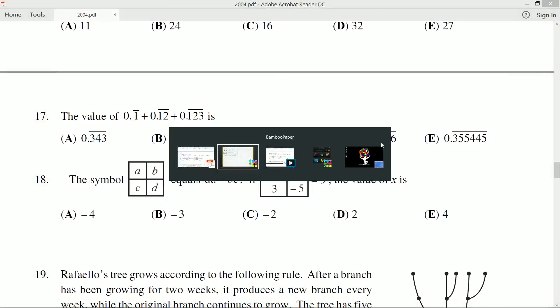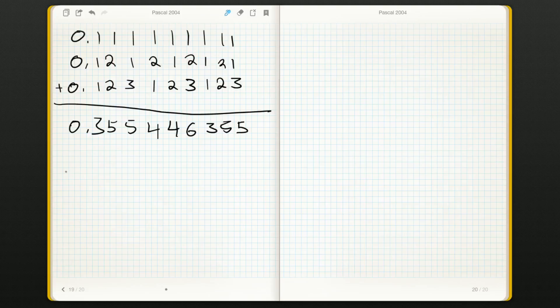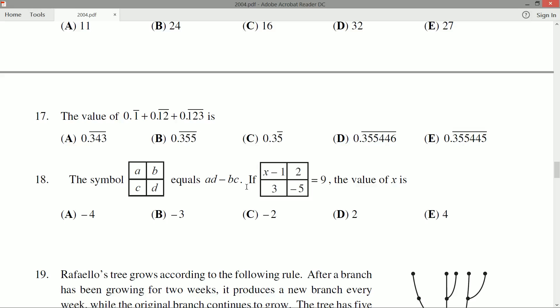So I don't even need to write any more decimals out. I know that this is going to be, because this is the only option available that fits everything we've got going on. It's going to be 0.355446 repeating.